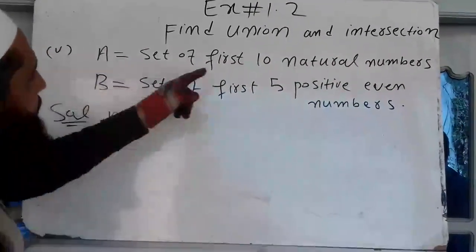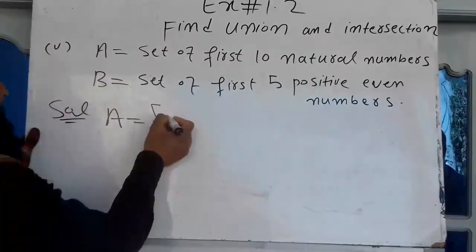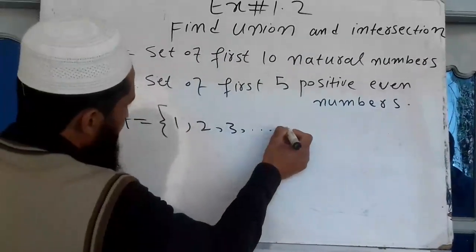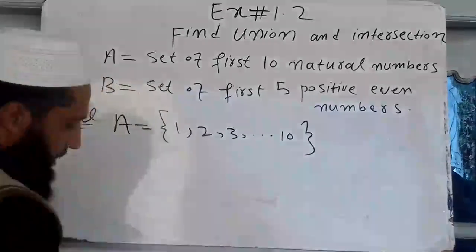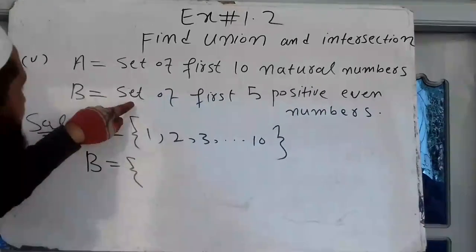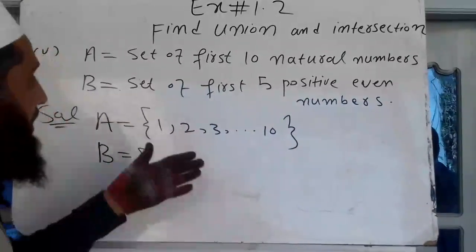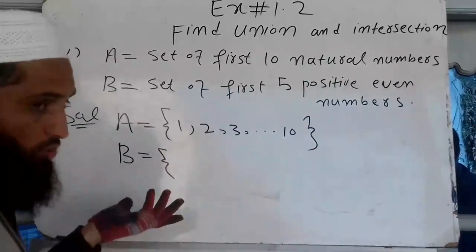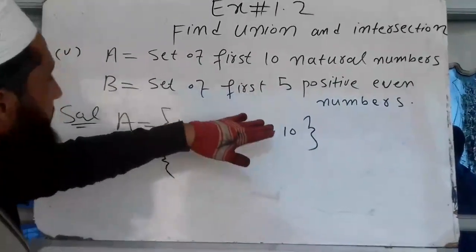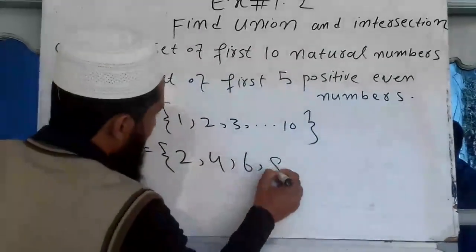This is a set of first 10 natural numbers: one, two, three, half to ten — those three dots are called ellipses. This is a set of first five positive even numbers: two, four, six, eight, ten.